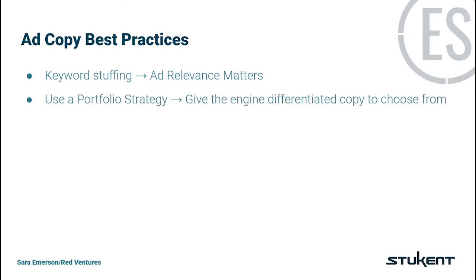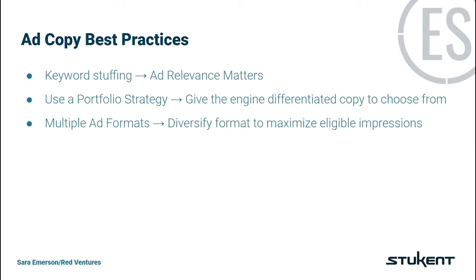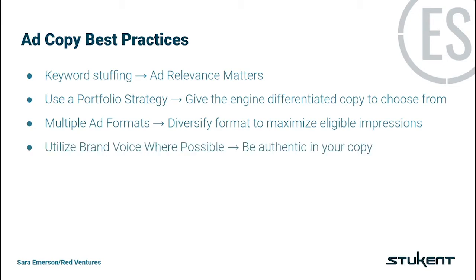While a single piece of keyword-stuffed ad copy is a step in the right direction, you'll also want to utilize a portfolio of differentiated ads. This gives the engine the ability to serve the best ad for each individual auction and ensure that the right person sees the right copy. You can utilize as many pieces of ad copy as makes sense for your business, but ensure that they are all different from each other. Part of your portfolio should include multiple ad formats. Both of the major search engines have two primary ad copy formats: responsive search ads and expanded text ads. Utilizing both ad types will ensure eligibility for as many options as possible. The final best practice is to utilize brand voice whenever possible. Your ad should be authentic to your brand and have a similar tone to your landing pages or other marketing channels. This builds trust with your customers and lets them know what to expect from the sales journey.